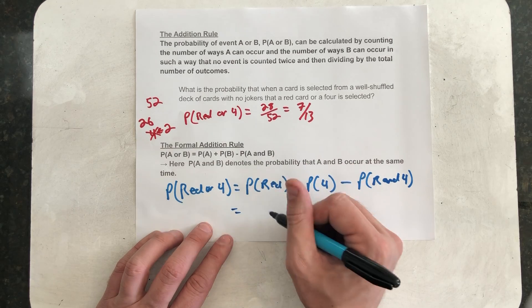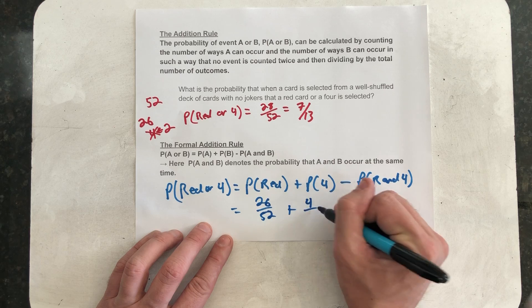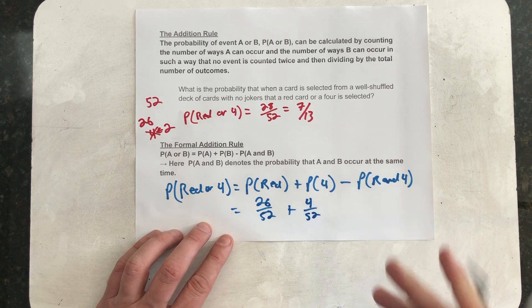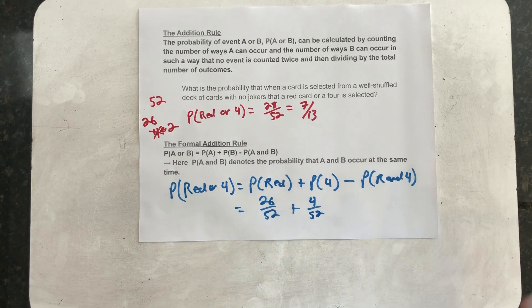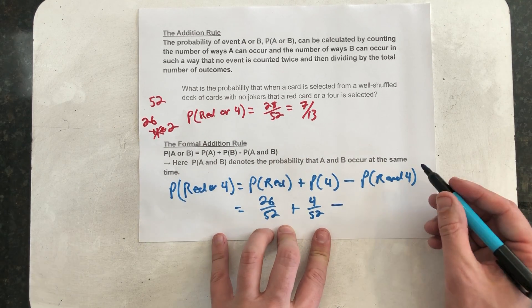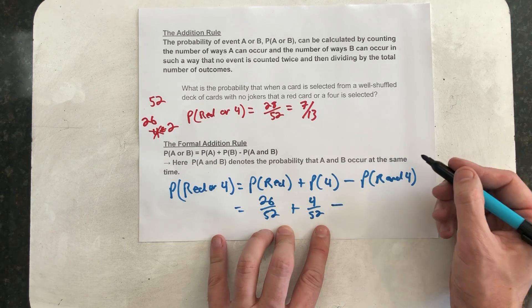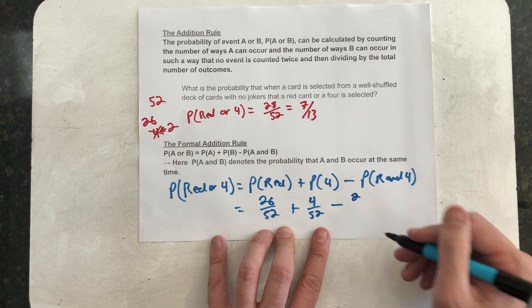Okay, well there are 26 out of 52 red cards. There are 4 out of 52 4s, just like there are 4 3s and 4 2s. And then the question, how many red 4s are there, right? How many cards are both red and 4 at the same time? Well, there are 2. The 4 of hearts and the 4 of diamonds.